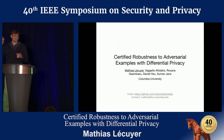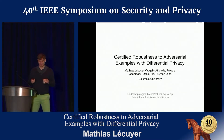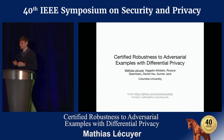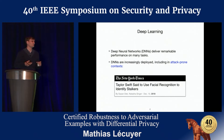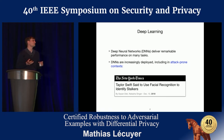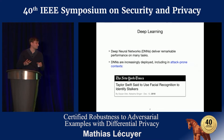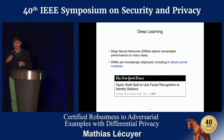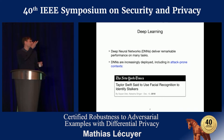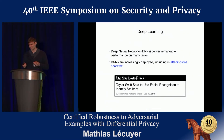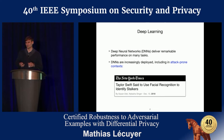Hello everyone, I'm Matthias. Thank you for coming to this talk about defense against adversarial examples with some provable guarantees. Recent progress in machine learning and deep neural networks has led to really good performance at many tasks, and because of that they're increasingly deployed in attack-prone contexts. A recent example is Taylor Swift using facial recognition at her concerts to identify stalkers, and big companies like Ticketmaster are investigating replacing tickets with face recognition.